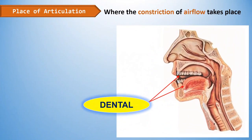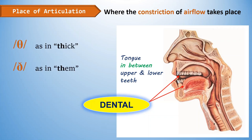Next is dental. Dental sounds are produced with the tongue in between the upper and lower teeth. Dental consonant sounds are the soft TH sound, pronounced as TH as in 'thick,' and the hard TH as in 'them.'